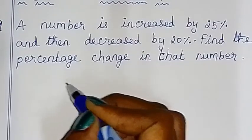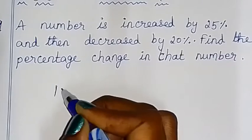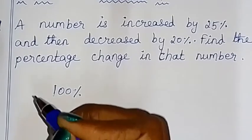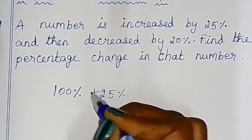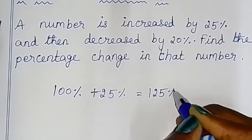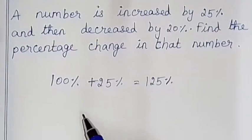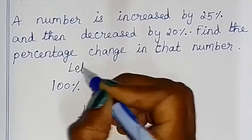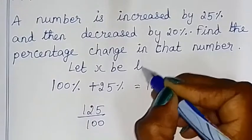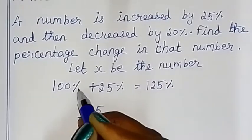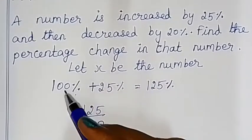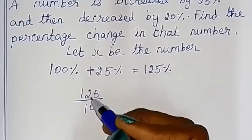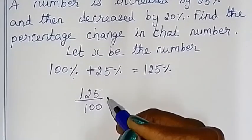If you have one number at 100%, a 25% increase gives you 125%. So, after the 25% increase, the value becomes 125 by 100 into x.